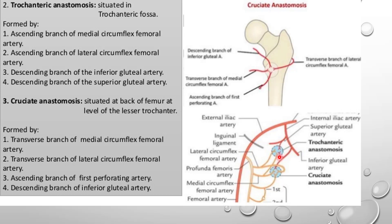The other two contributors are descending branches from the superior gluteal artery and the inferior gluteal artery, both of which are branches of the internal iliac artery coming downward. These four arteries together form the trochanteric anastomosis.